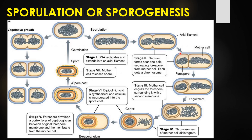The forespore forms and separates itself from the mother cell. In stage three, the mother cell engulfs the forespore, surrounding it with a second membrane. The mother cell completely engulfs the forespore, forming a double membrane layer.